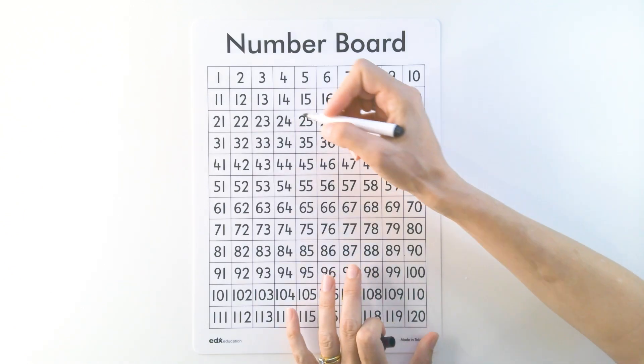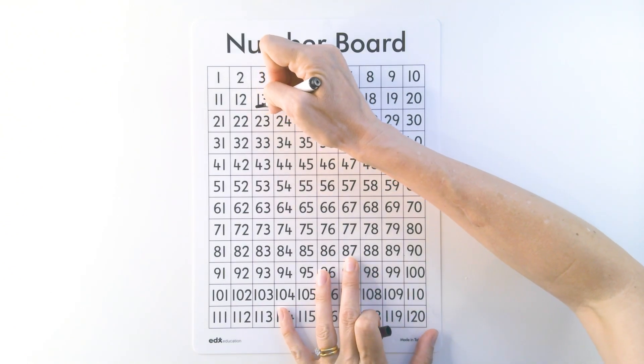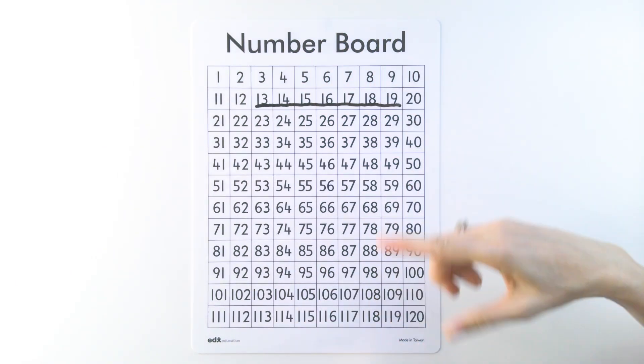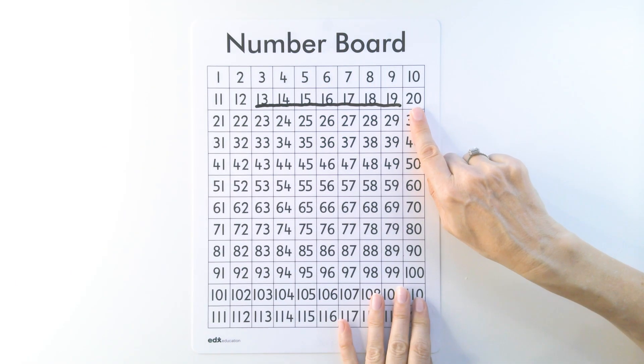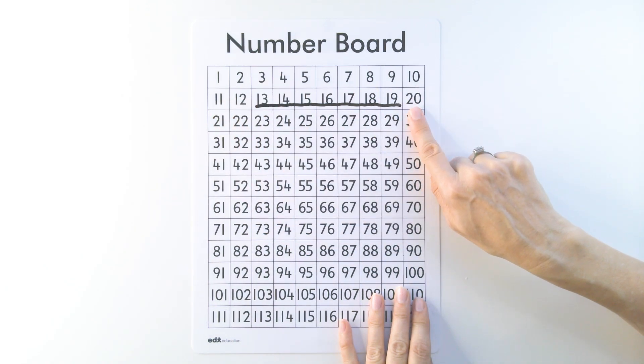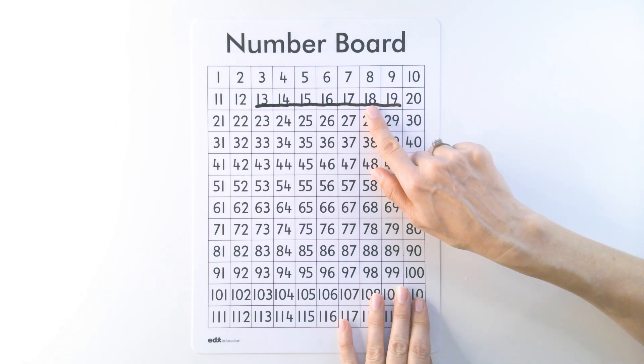Today we're looking at the teen numbers and they are here and we're going to be counting backwards from 20 to 11. I'll start and then you can join in and I want you to listen how long I say the n sound for. 20, 19, 18. Do you think you can join me? Okay, ready?